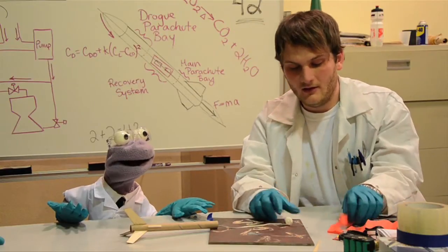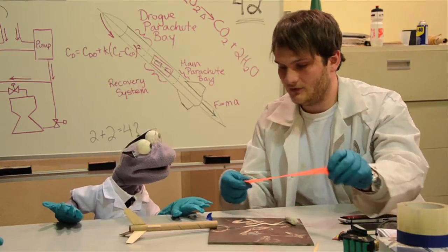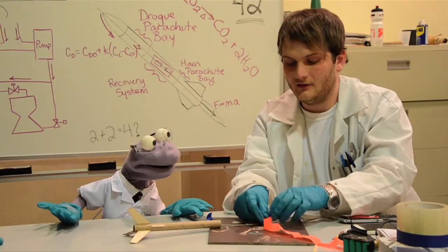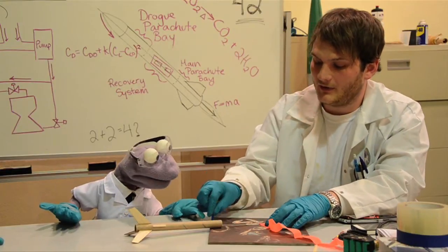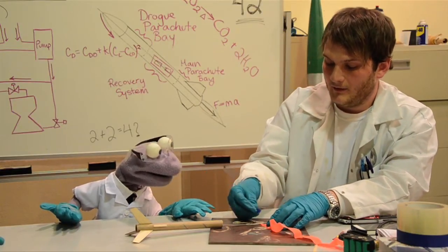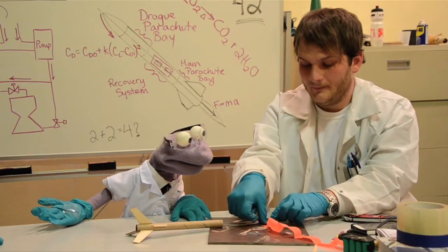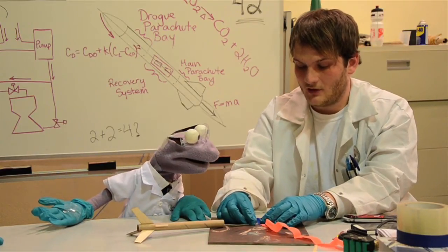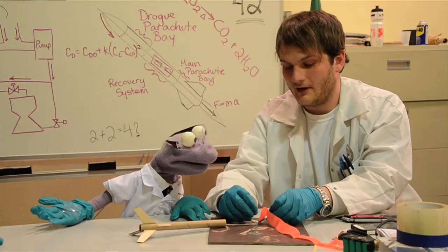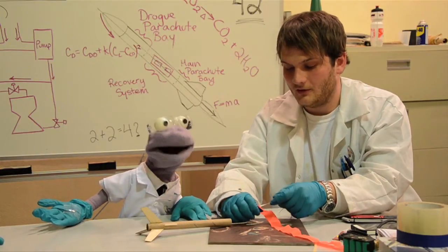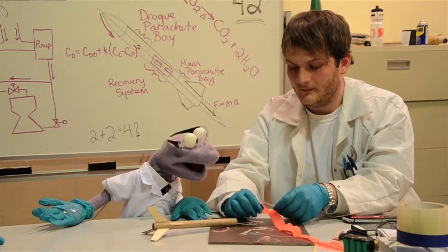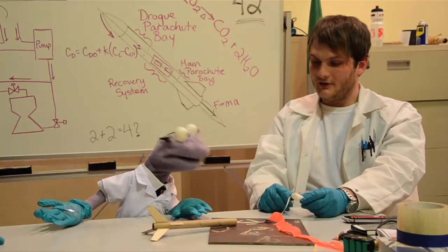There we go. And then we'll attach the streamer to the shock cord using a little piece of tape, and it doesn't really matter what kind of tape you use here. And you'll just tape the streamer and then to the shock cord and then tape around back to the streamer. And then your recovery section is done. Ta-da!